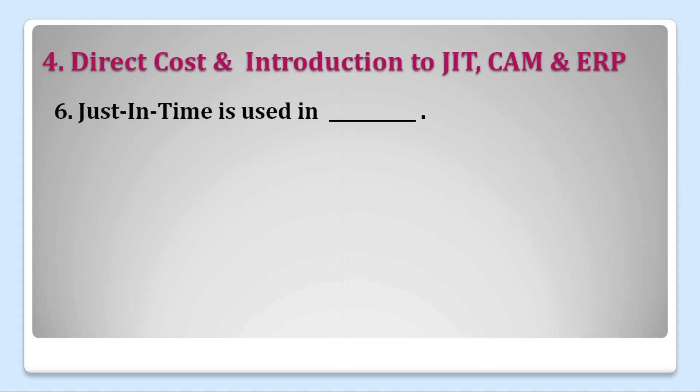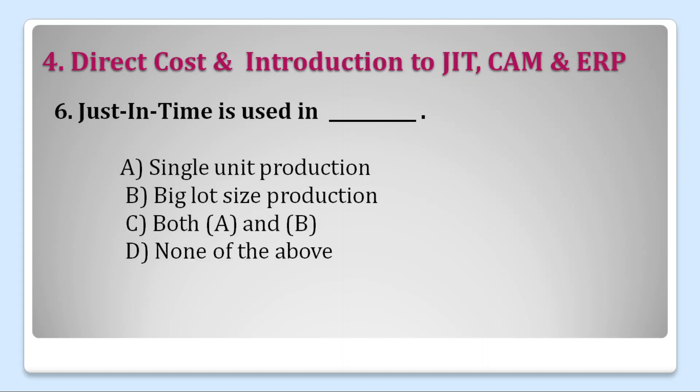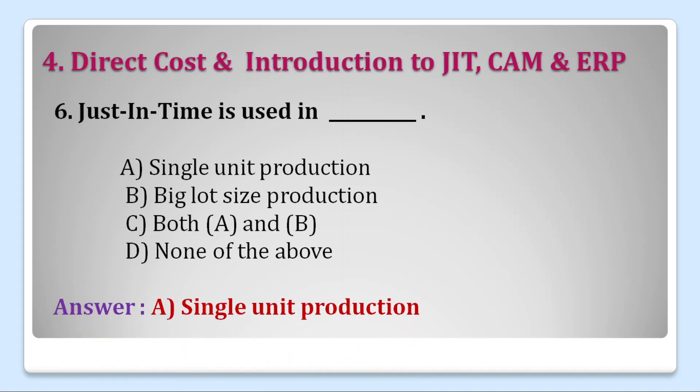Question six: JIT — Just in Time — is used in: A. single unit production, B. big lot size production, C. both A and B, or D. none of the above. Just in Time is used in single unit production. Right answer is A.